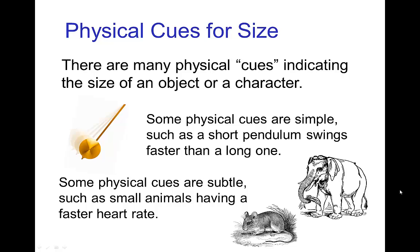Because visual cues don't always successfully establish size and scale, we can also use physical cues to establish the size of an object or character. Some of these physical cues are simple — for example, we know that a shorter pendulum swings faster than a longer one, so we can use the timing of motion to give us a sense of scale. Other physical cues are a lot more subtle.